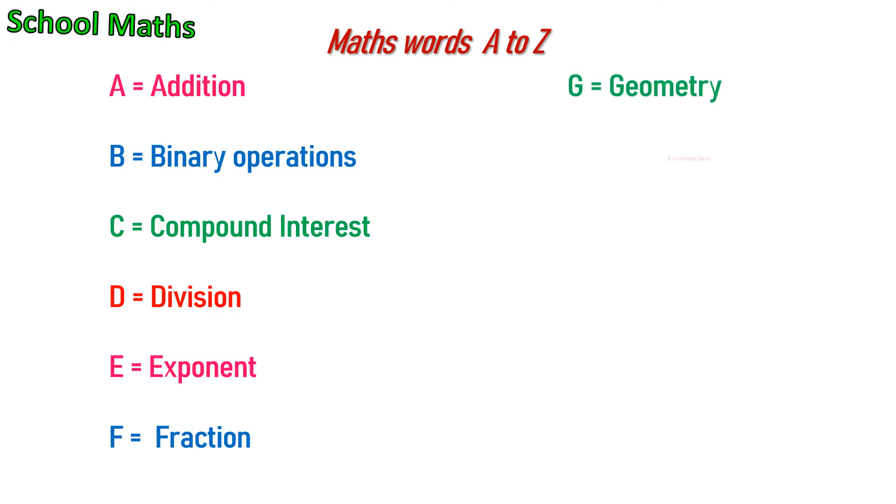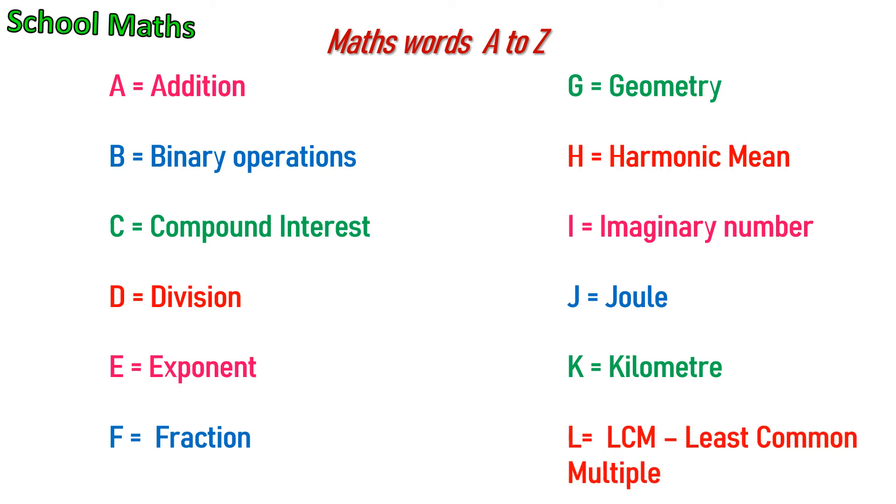G for geometry. H for harmonic mean. I for imaginary number. J for joule. K for kilometer. L for LCM, least common multiple.